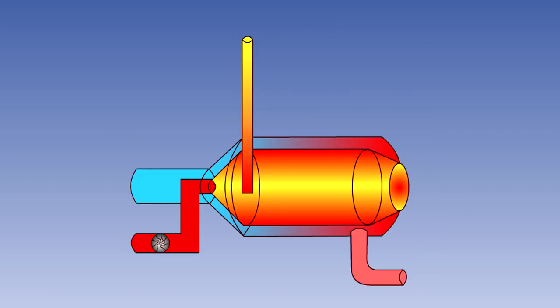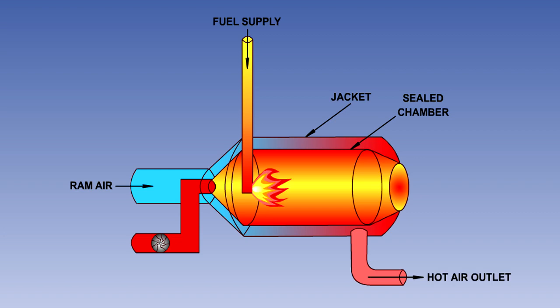In a combustion heating system, ram air is passed through a cylindrical jacket enclosing a sealed chamber in which a fuel-air mixture is burned. The ram air is heated by contact with the chamber walls. Air for combustion is derived from a separate air intake and is supplied to the chamber by means of a blower. The combustion heater is fully explained in the pneumatic systems lesson.